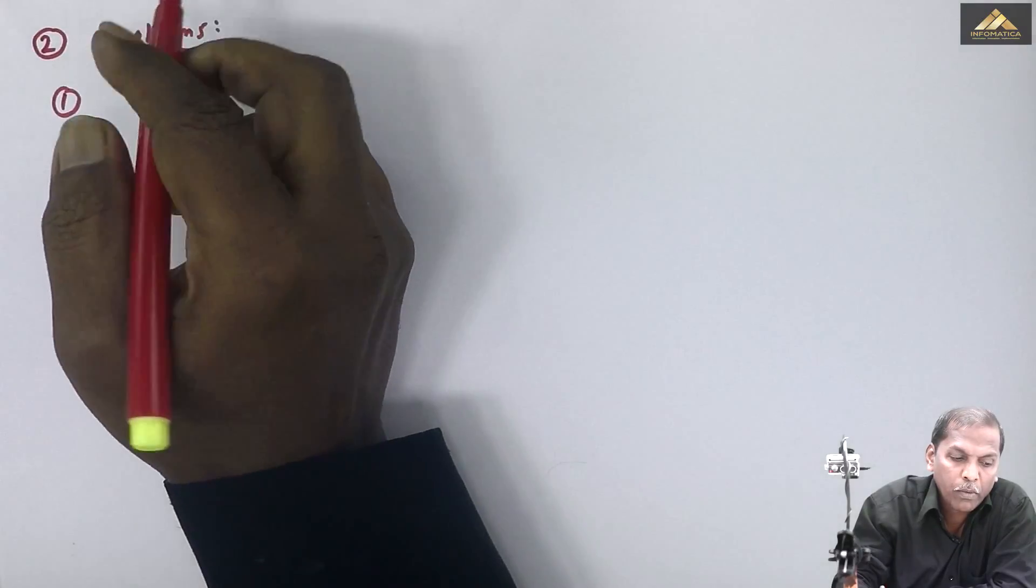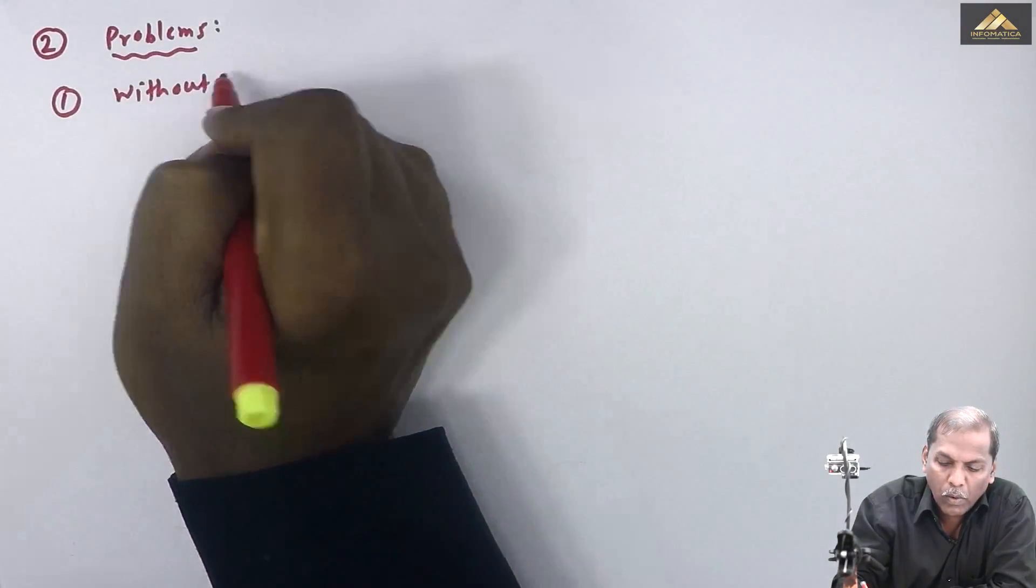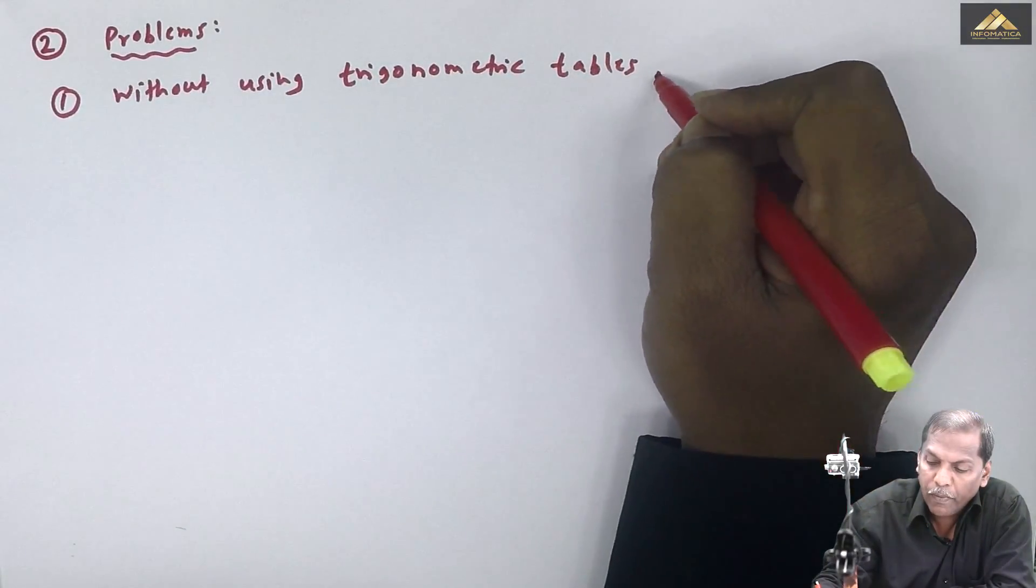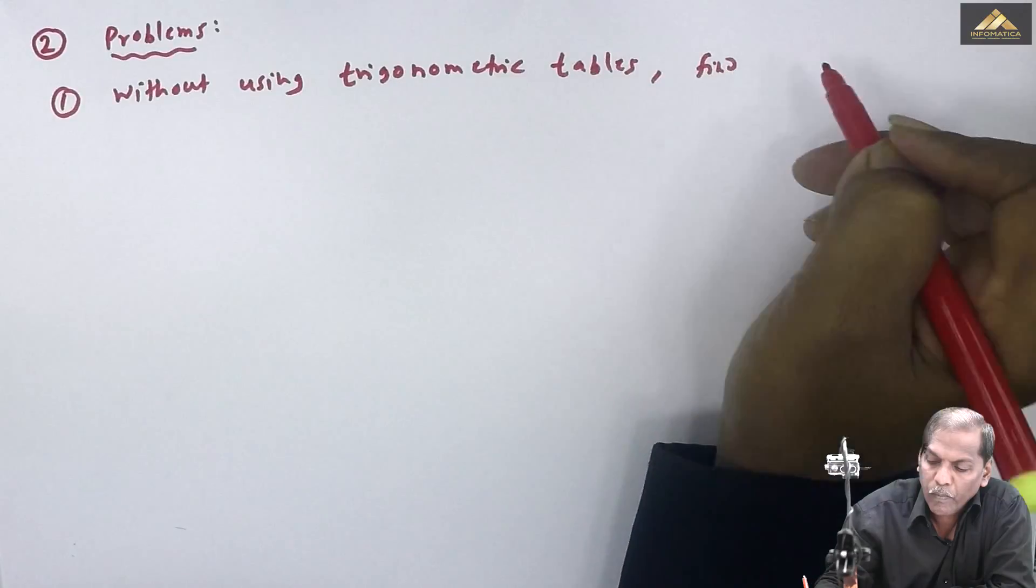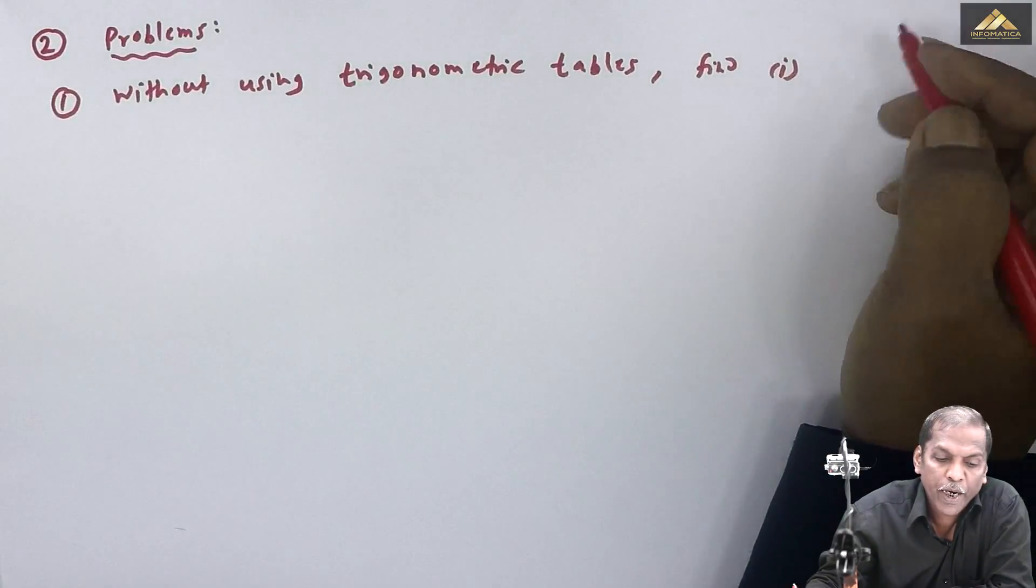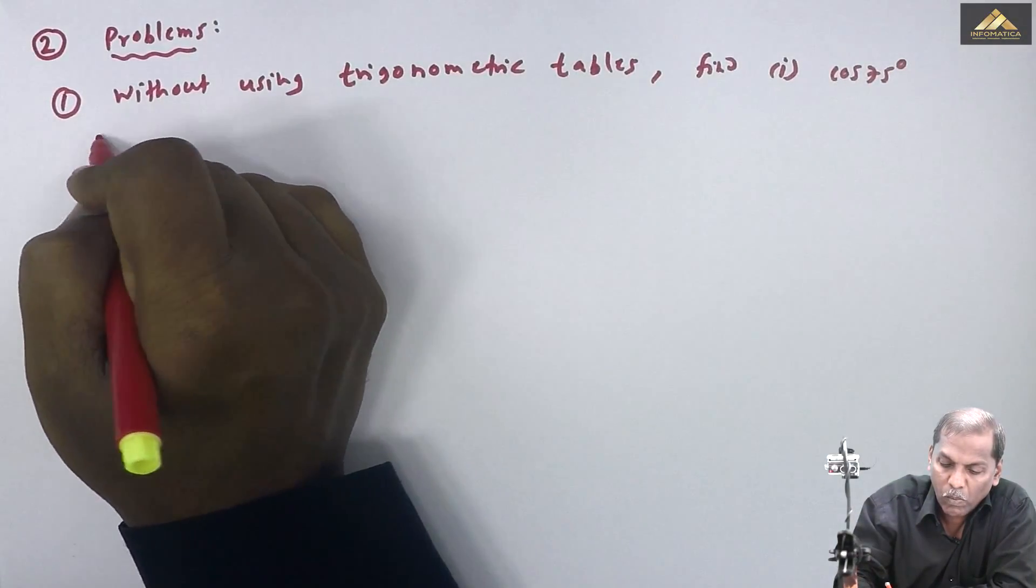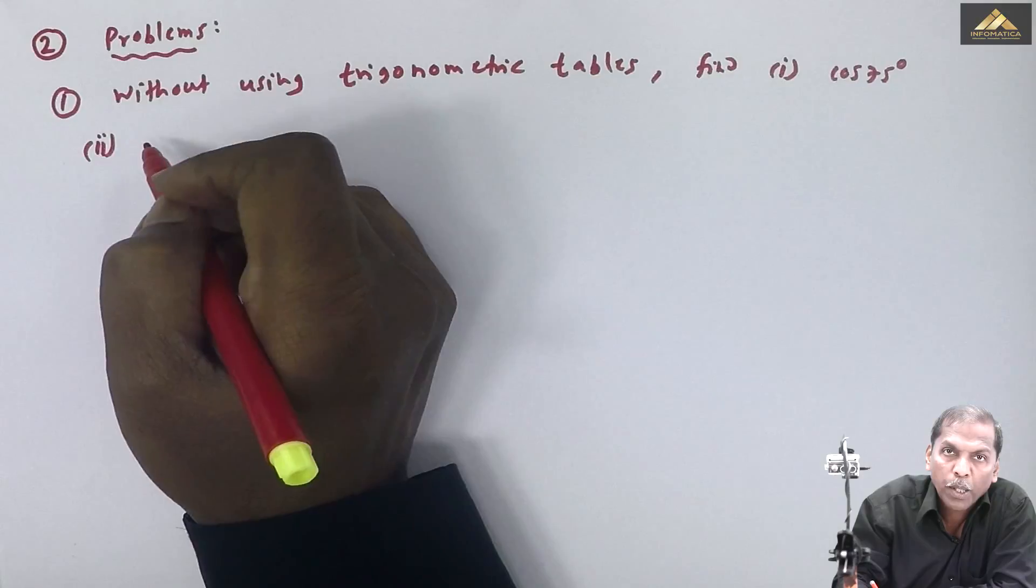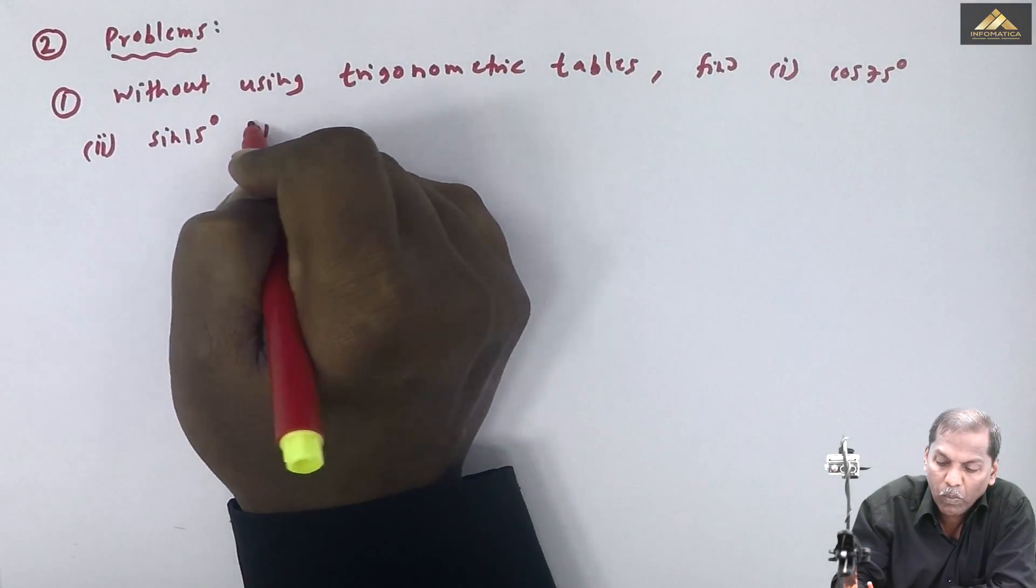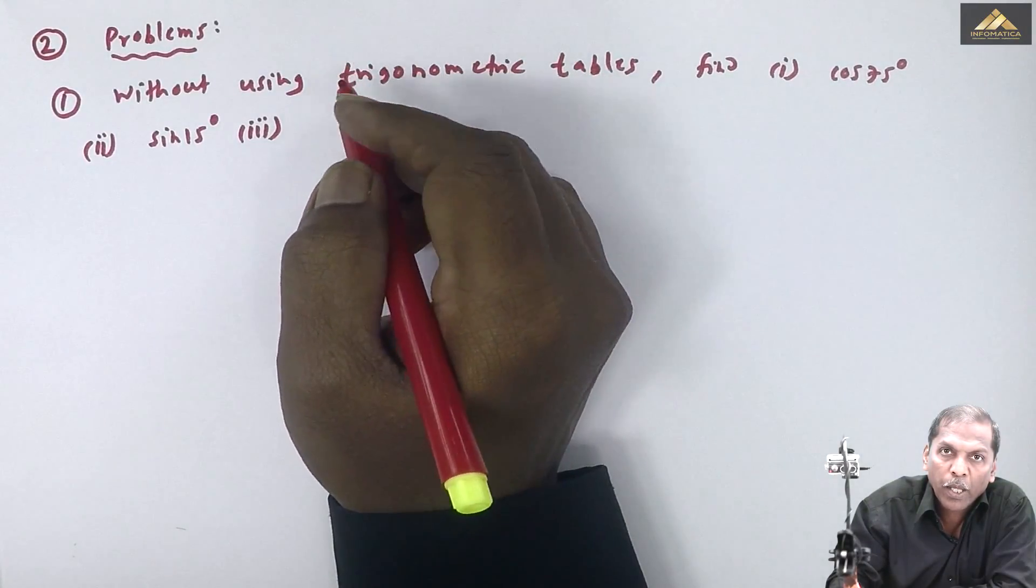Problem 1: Without using trigonometric tables, find (i) cos 75 degree, (ii) sin 15 degree, and (iii) tan 105 degree.